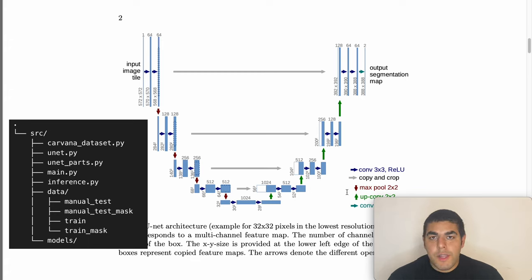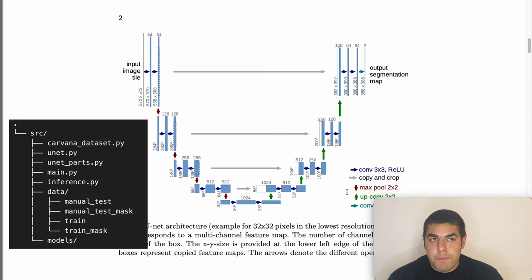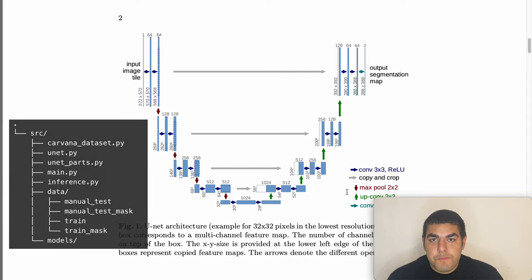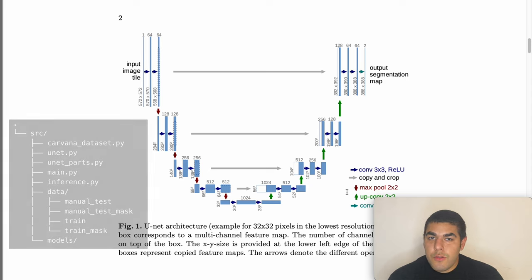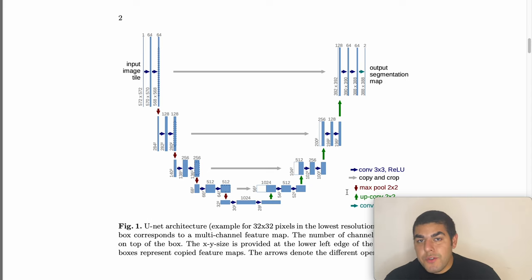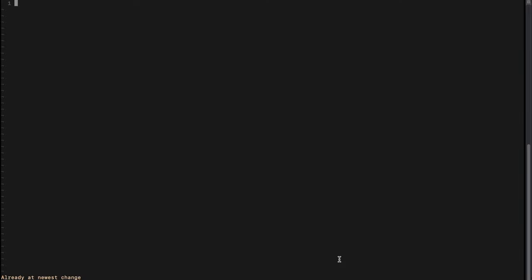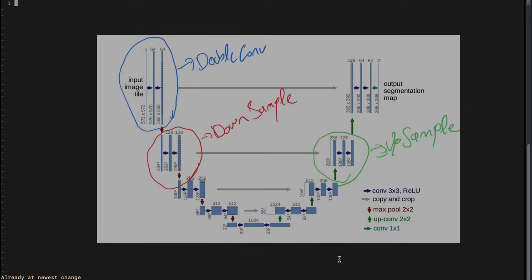The data has four folders: originally it has train and train_mask folders. The train folder contains the JPEG images and the train_mask folder contains the masks. I selected some example images for manual_test and manual_test_mask — these won't be included in training, we will just use them to visualize the test results.